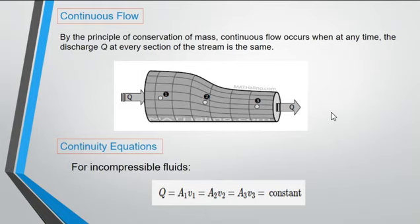By the principle of conservation of mass, continuous flow occurs when at any time the discharge Q at every section of the stream is the same. Since the discharge at every section of the stream is constant, continuity equations are formed.